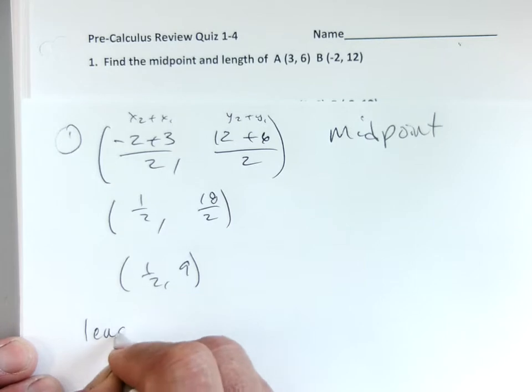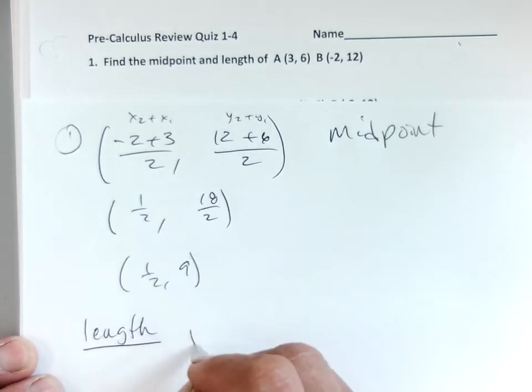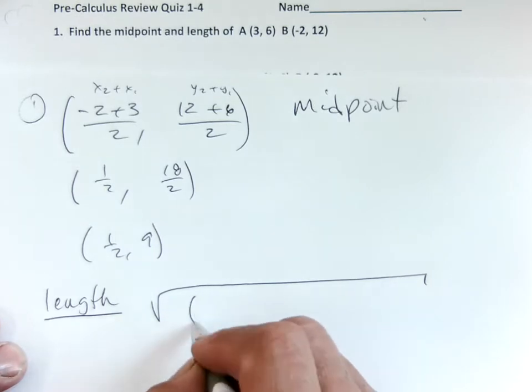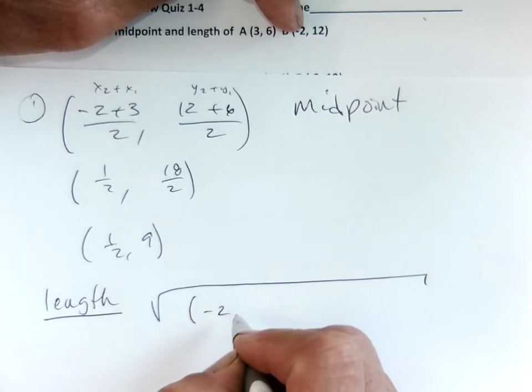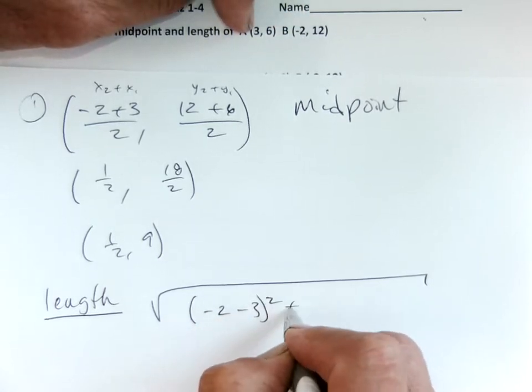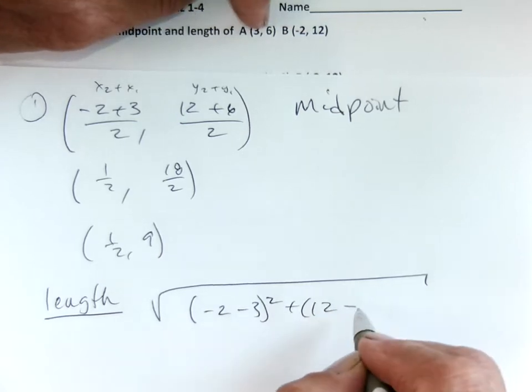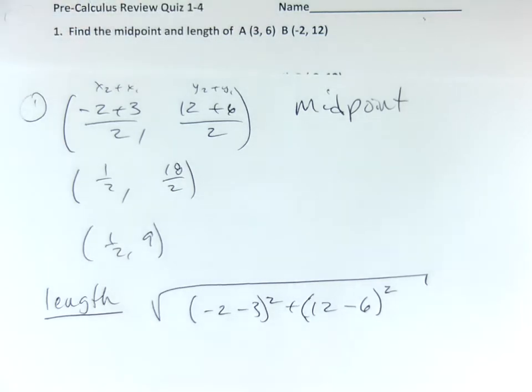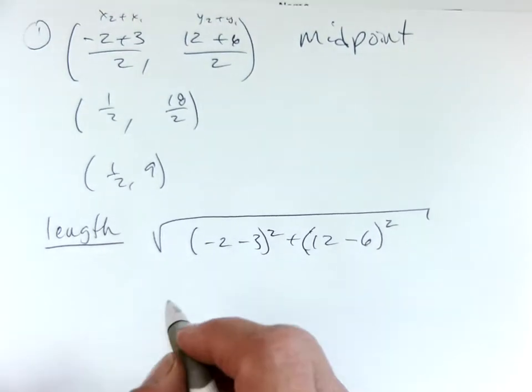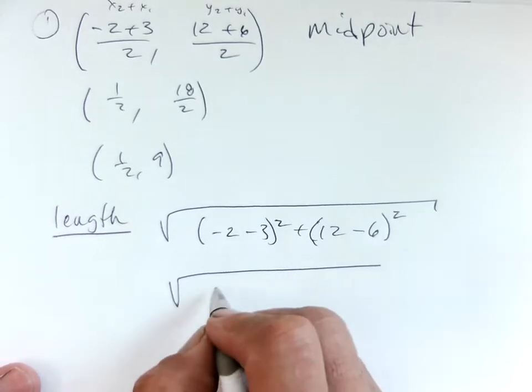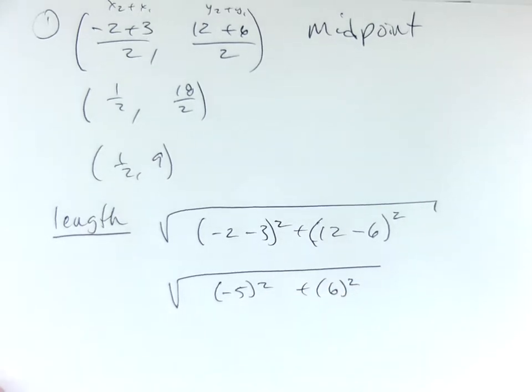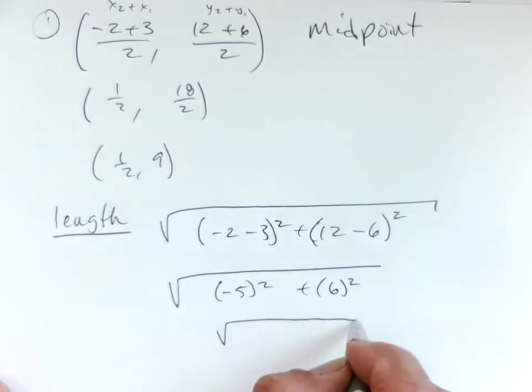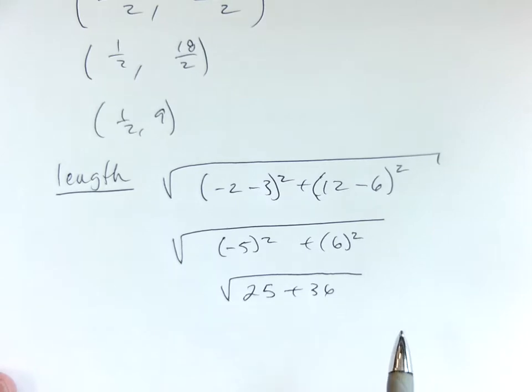Distance or length, same thing. Length or distance is the big square root of your parentheses, x2, and these are all in your notes, x2 minus x1 squared plus y2 minus y1 squared. That's going to give me a negative 5 squared plus a 6 squared.